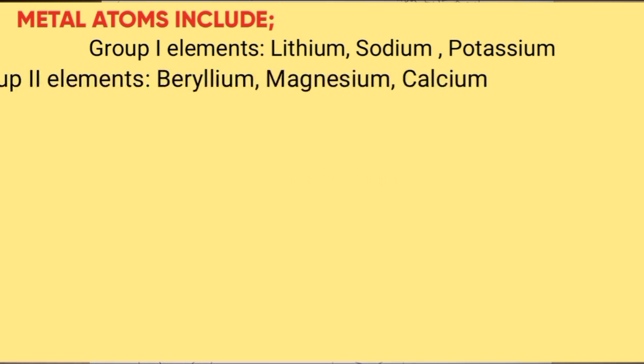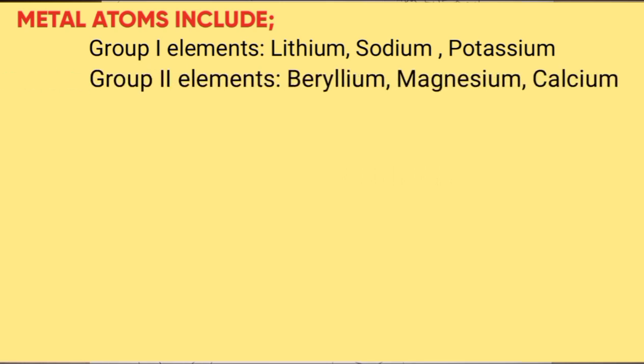Metal atoms include group 1 elements: lithium, sodium, potassium; group 2 elements: beryllium, magnesium, and calcium; group 3 elements: boron and aluminum.